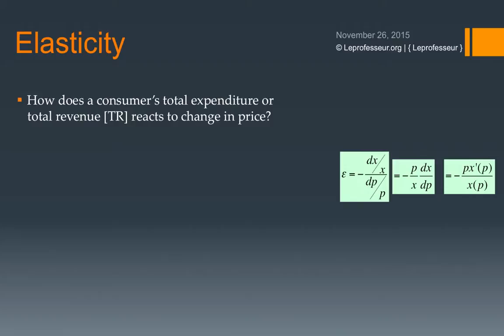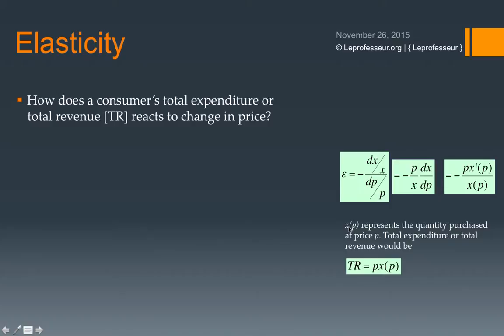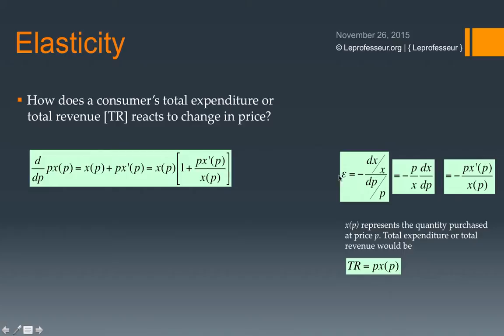Now consider total expenditure or total revenue. If you are buying quantity x(P) at a price P, then multiplying x(P) by P gives your total revenue: TR = P · x(P). We can now express this in terms of epsilon, the elasticity of demand.